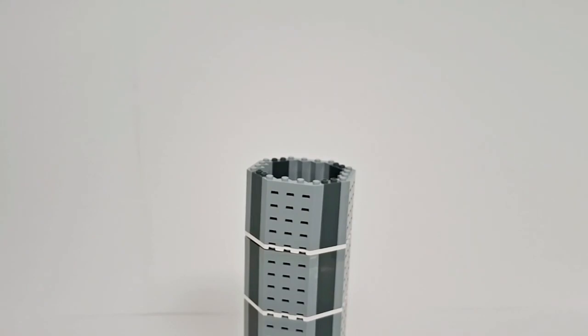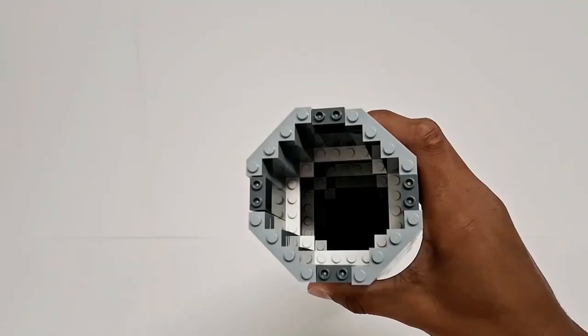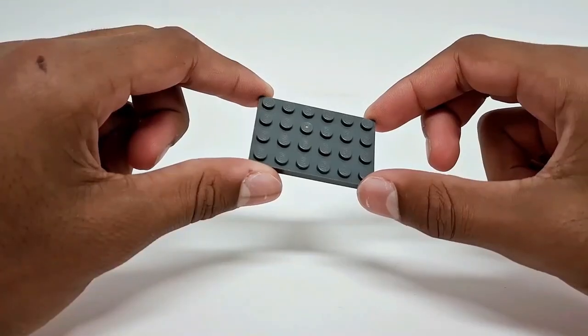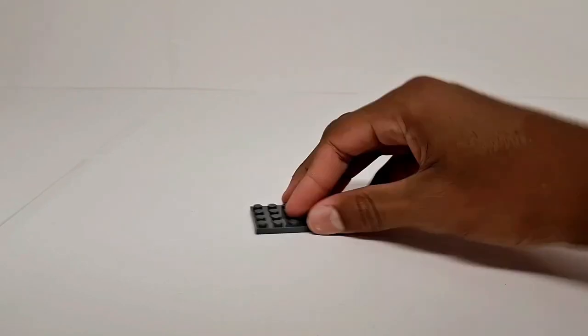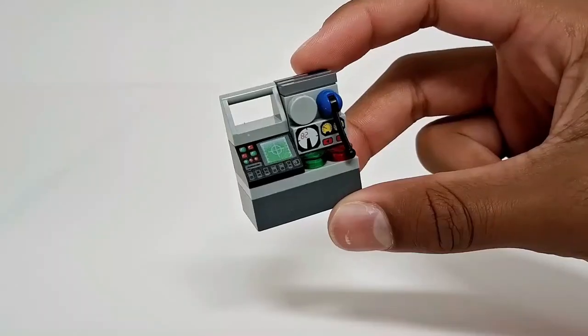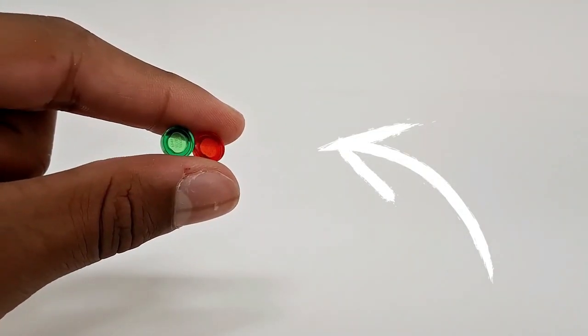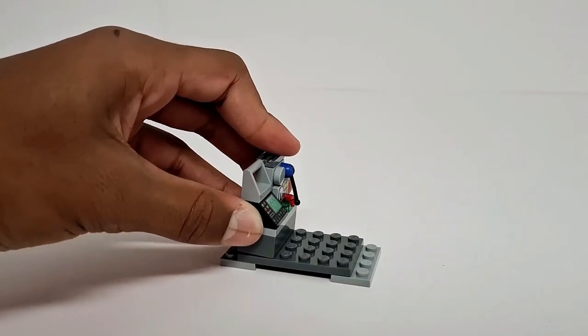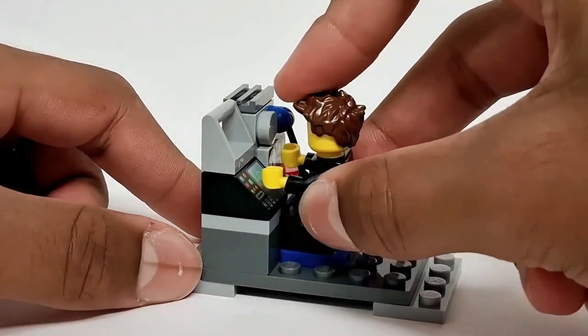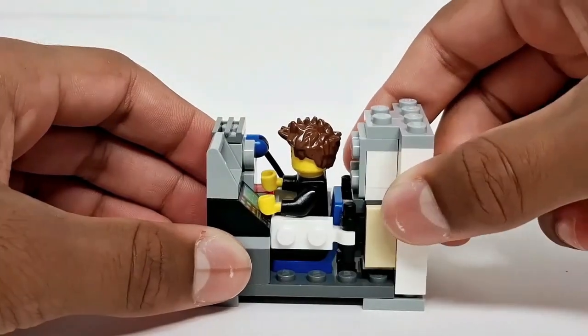...you can't just put a minifigure in the rocket ship since there's no part for it to stay in. So we're going to build him that. I took this 4x6 plate and added two smaller plates on the sides and then I built some controls by using this high-tech computer, a lever, some buttons, and this random part I found.